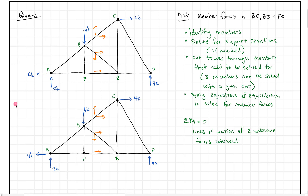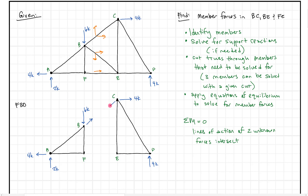To draw the free body diagram, I copied down the structure and deleted the middle members — the ones we're trying to solve for. When I delete them, I draw new unknown forces in the same direction as those members, but I always draw them in tension, so always pulling away from the joint. I label those BC, BE, and FE. For anyone studying for the fundamentals of engineering exam — you can do it. I like to assume tension so that if I get a negative value, I know it's actually in compression.